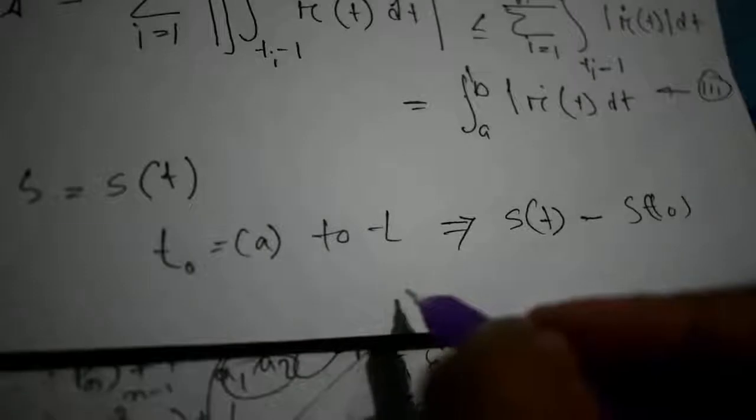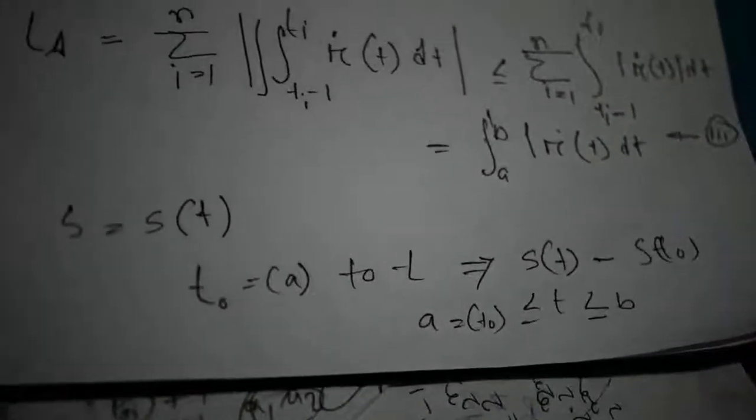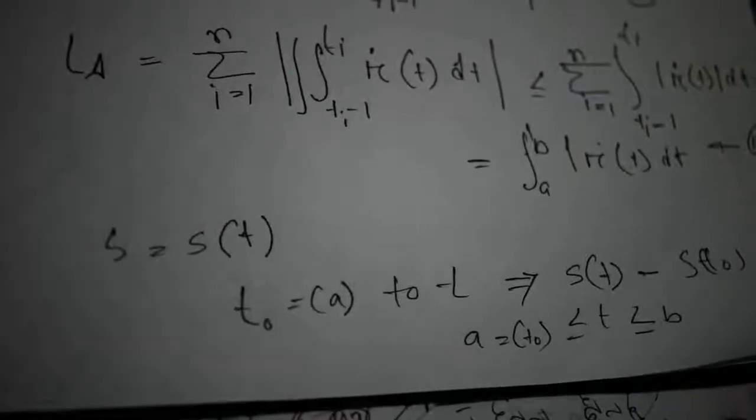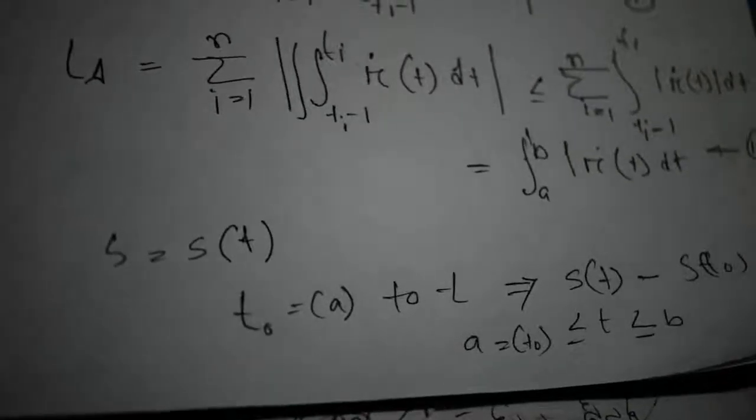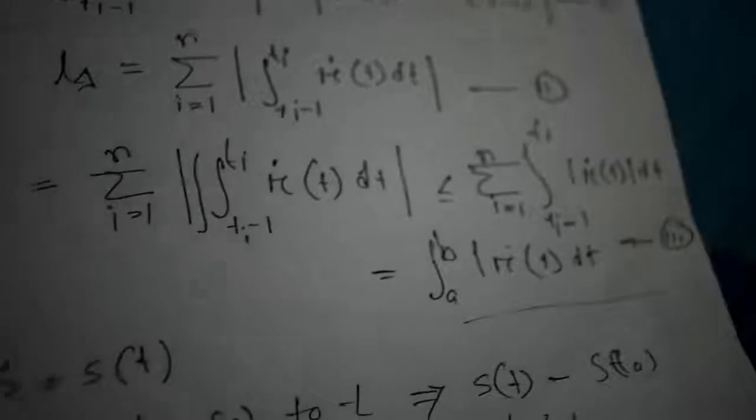Where we have seen that a equal to t₀ less than or equal to t, and this is less than or equal to b. Hence from this equation we can write the arc length s(t).